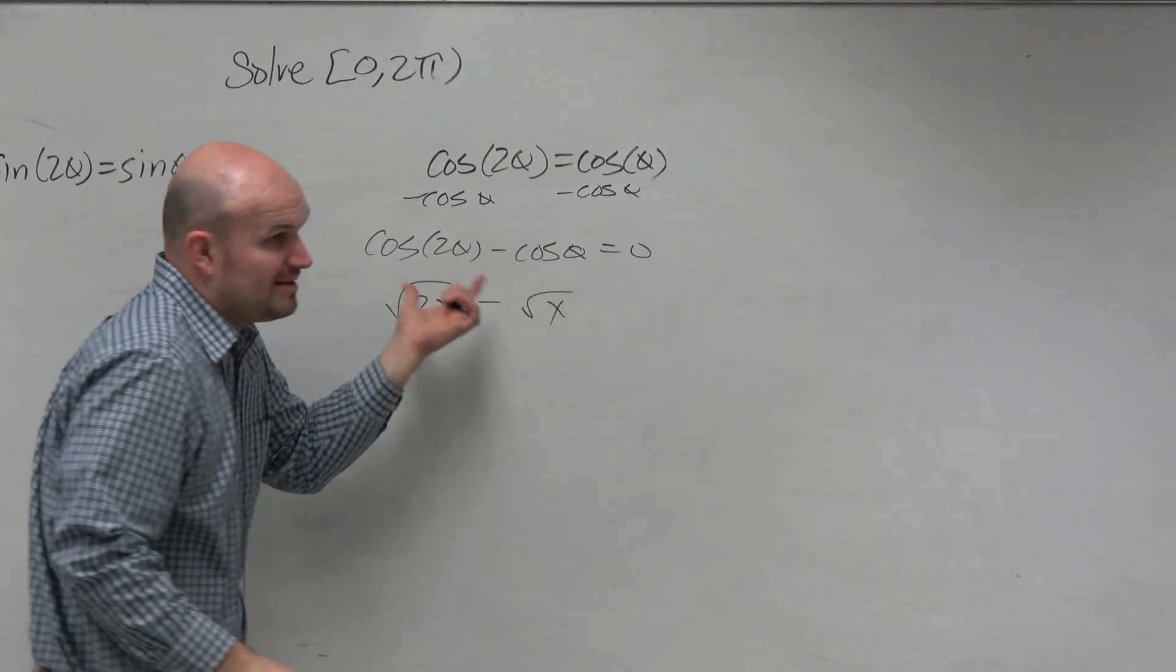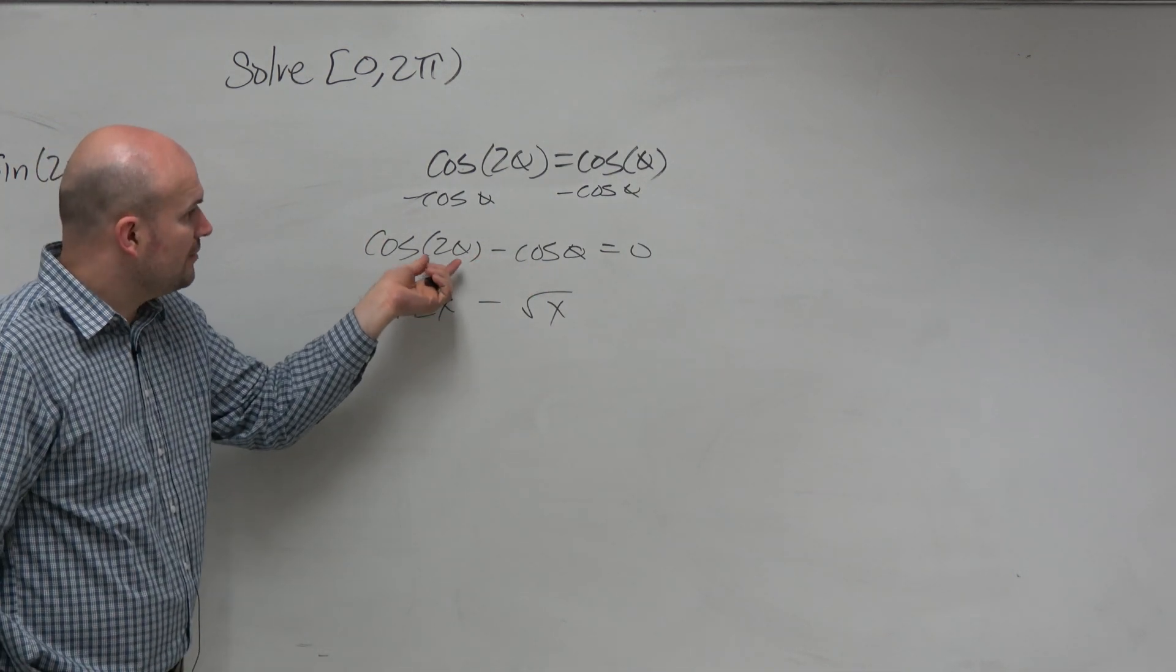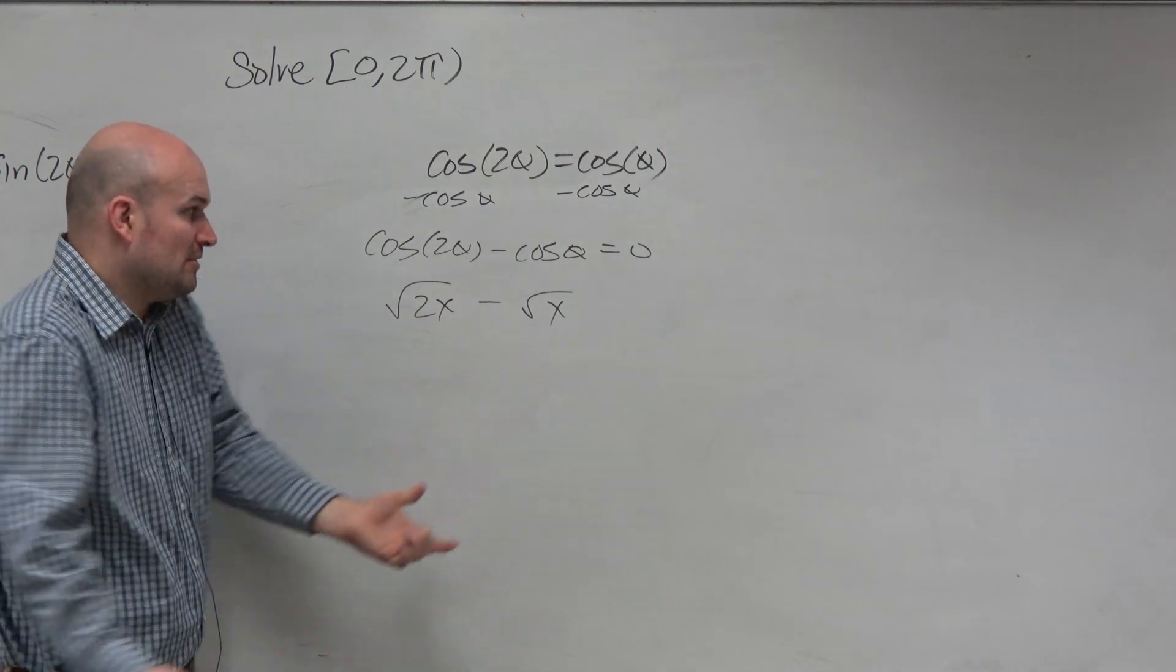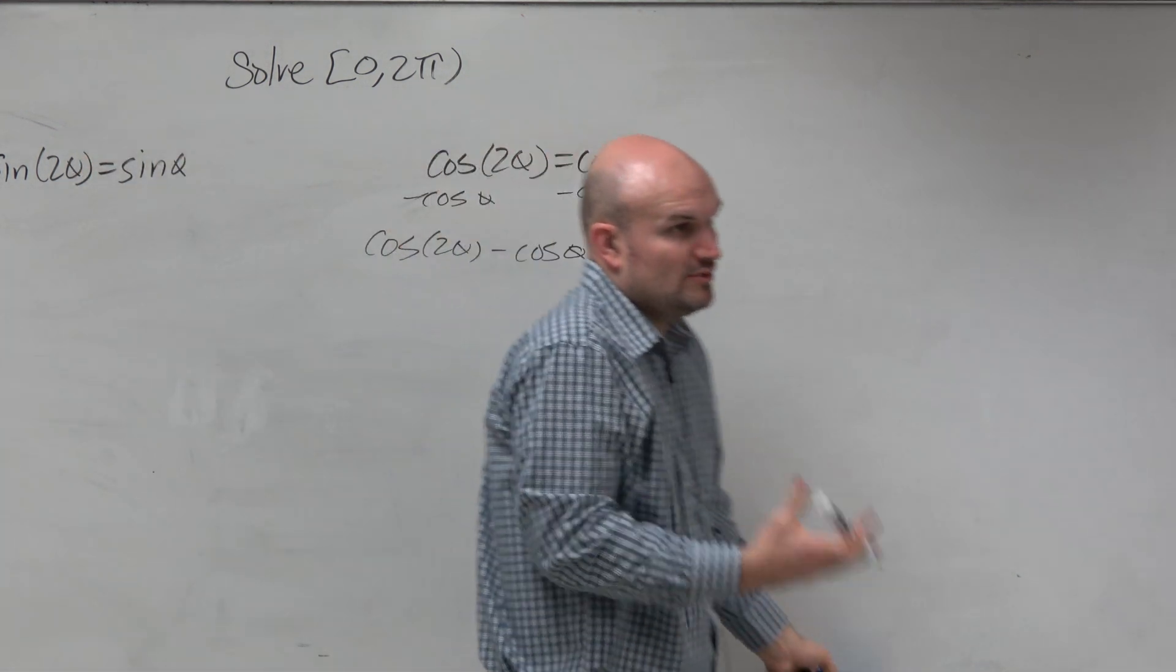You can only combine trigonometric functions when the argument 2 theta and theta is the same. They're not the same, so you can't combine them. So now we're kind of stuck. What do we do?